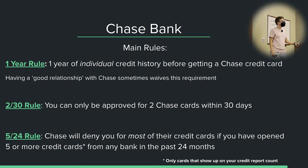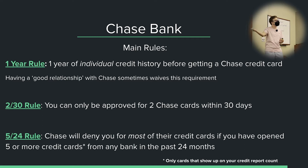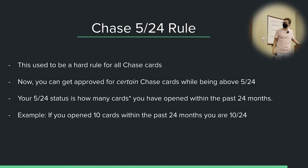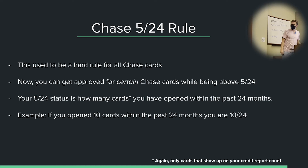In terms of timing around 5/24, usually you just do it by months. It's safe to wait about a full month after you go below 5/24 to apply for any Chase cards just to be 100% sure. Like, the day you go below 5/24, don't go apply for a Chase card — that's a little risky. Wait about a month after. Your 5/24 status is just how many cards you've opened in the past 24 months that show up on your credit report. If you opened a card yesterday, that's not part of your 5/24 status.